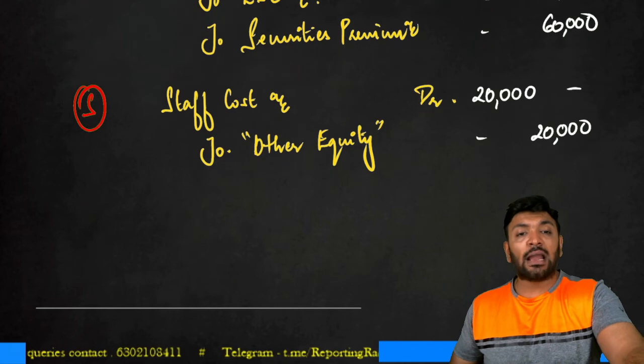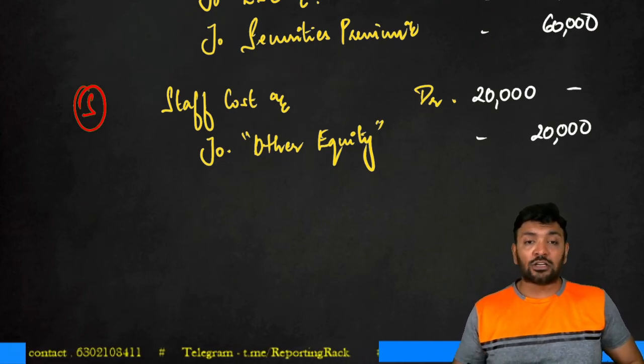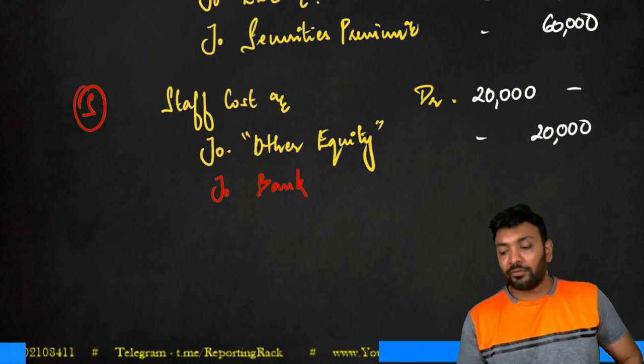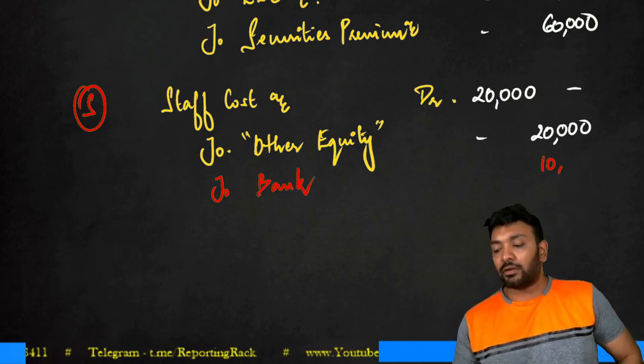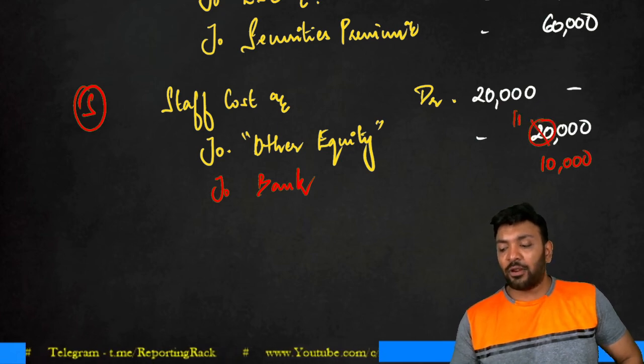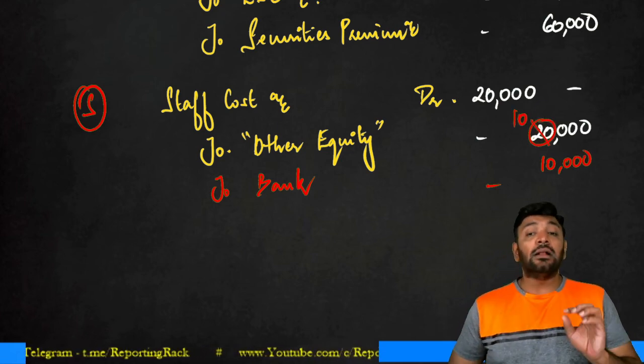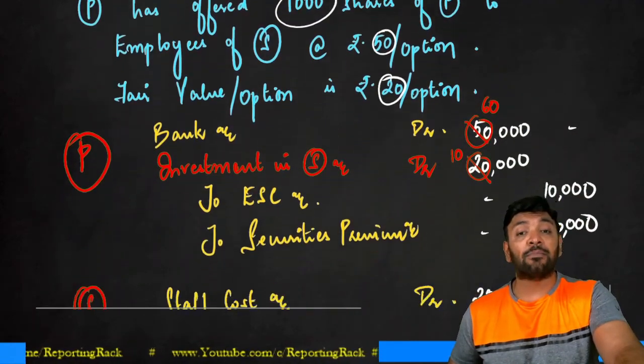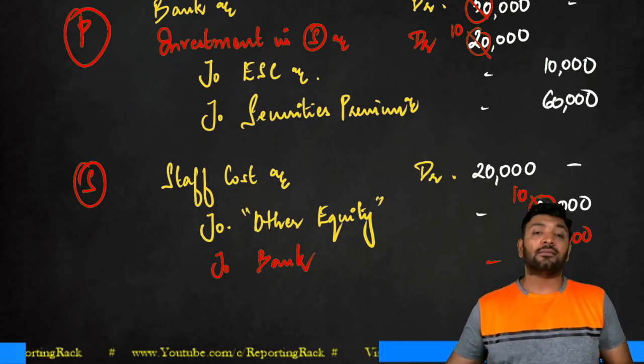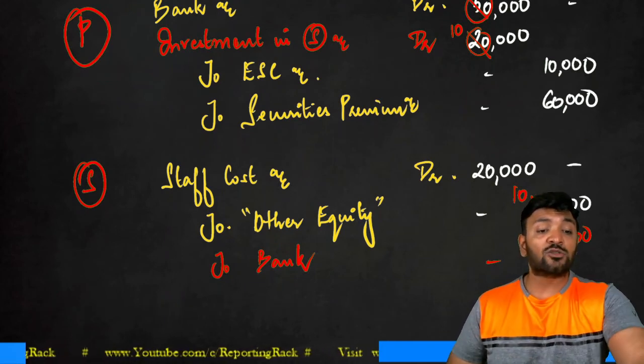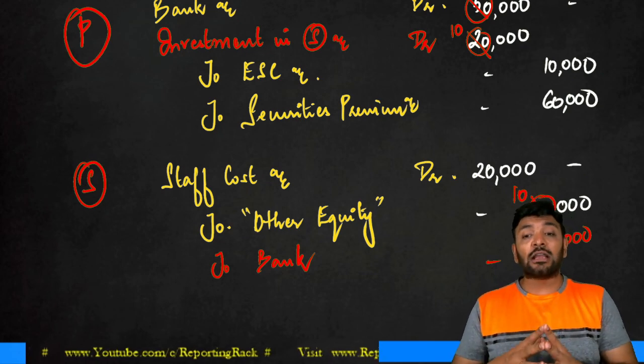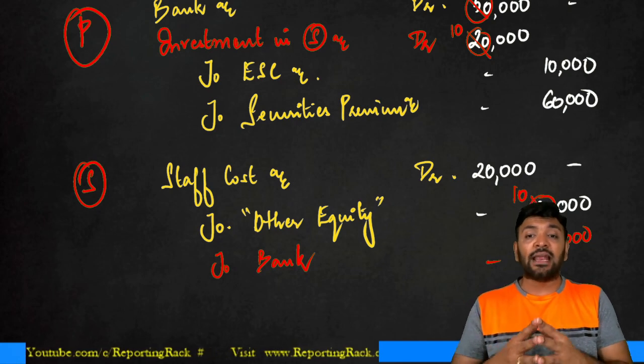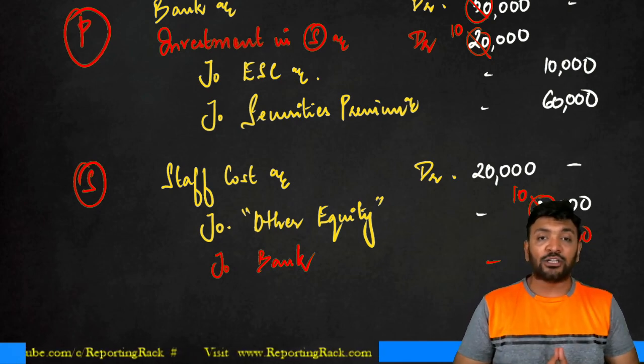And if I look at this cost, staff cost is 20,000 rupees, correct. But I will also record to bank 10,000, and this will be only 10,000. This would be my situation if I am saying 50% of the cost is reimbursed by the subsidiary to the parent enterprise. Clear? So this is one more adjustment which comes up whenever I am talking, the parent is issuing, the shares are issuing options to the employees of the subsidiary as a share-based payment option.